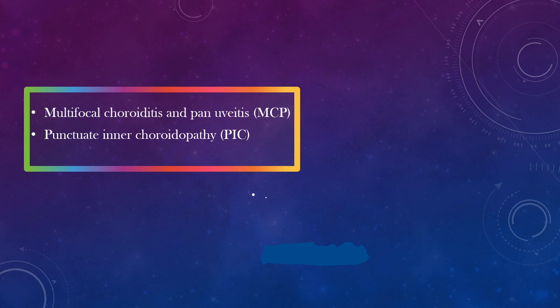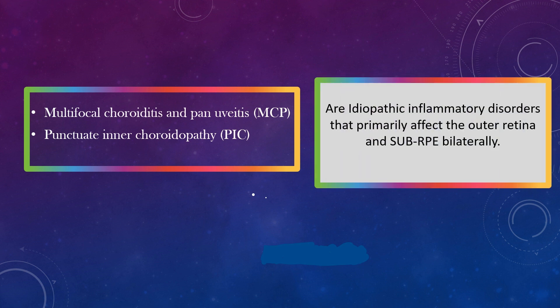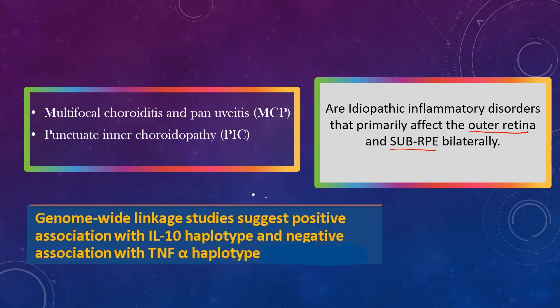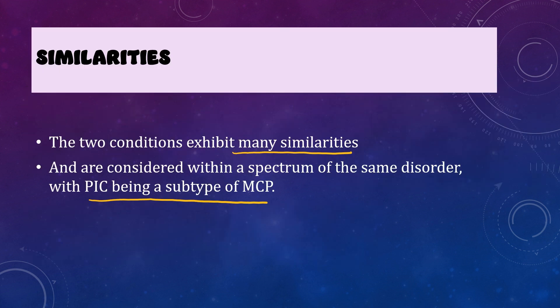The two disorders we are going to discuss today — multifocal choroiditis and panuveitis, and punctate inner choroidopathy — are idiopathic inflammatory disorders which primarily affect the outer retina and the space present below the retinal pigment epithelium. There is a lot of similarity between the two diseases. There is a positive association with IL-10 haplotype and negative association with tumor necrosis factor alpha haplotype in both. Because of these similarities, it is considered that the two disorders form part of a spectrum — meaning punctate inner choroidopathy might actually be a subtype of multifocal choroiditis and panuveitis.